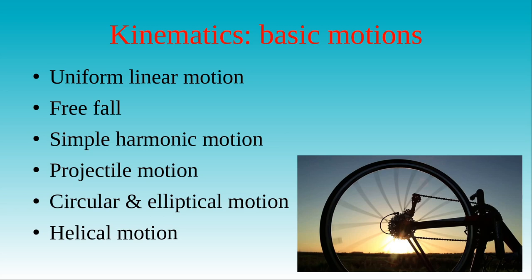After introducing the fundamental concepts of mechanics in the first part, we will present the kinematic descriptions of the basic motions in nature. The content of this presentation is the following. We start with the simplest form of motion, which is the uniform linear motion. After providing a simple definition and showing some examples, we will derive its equations of motion. Then we use plots of velocity and distance covered versus time to give a short analysis of the relations between these kinematic quantities.